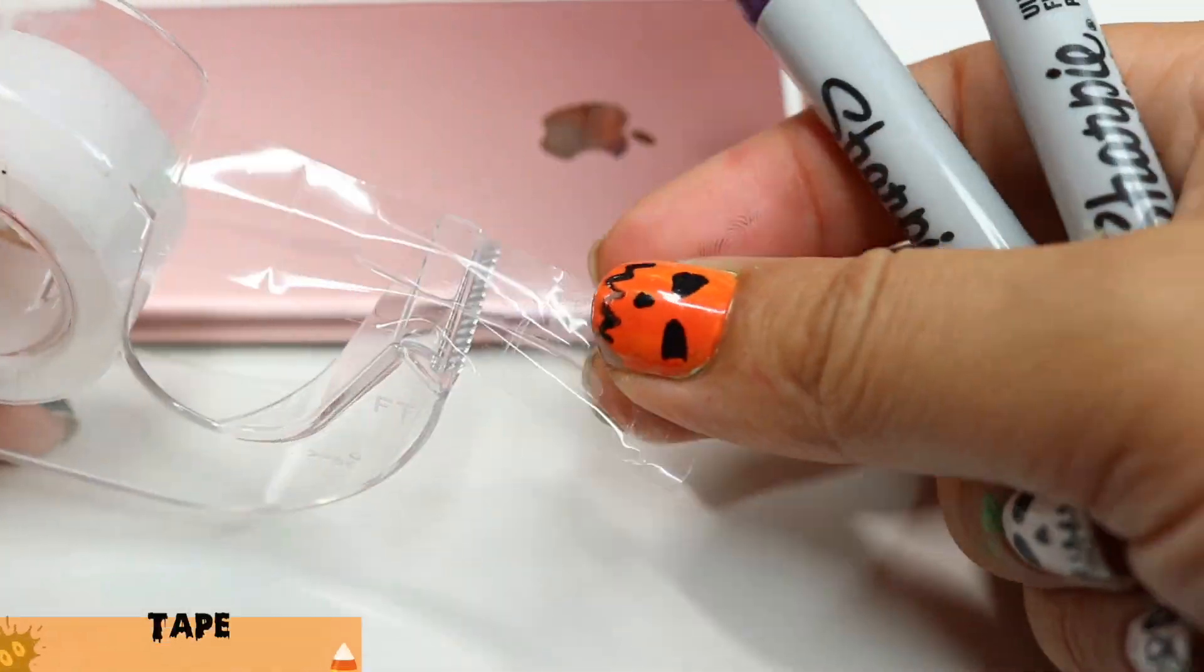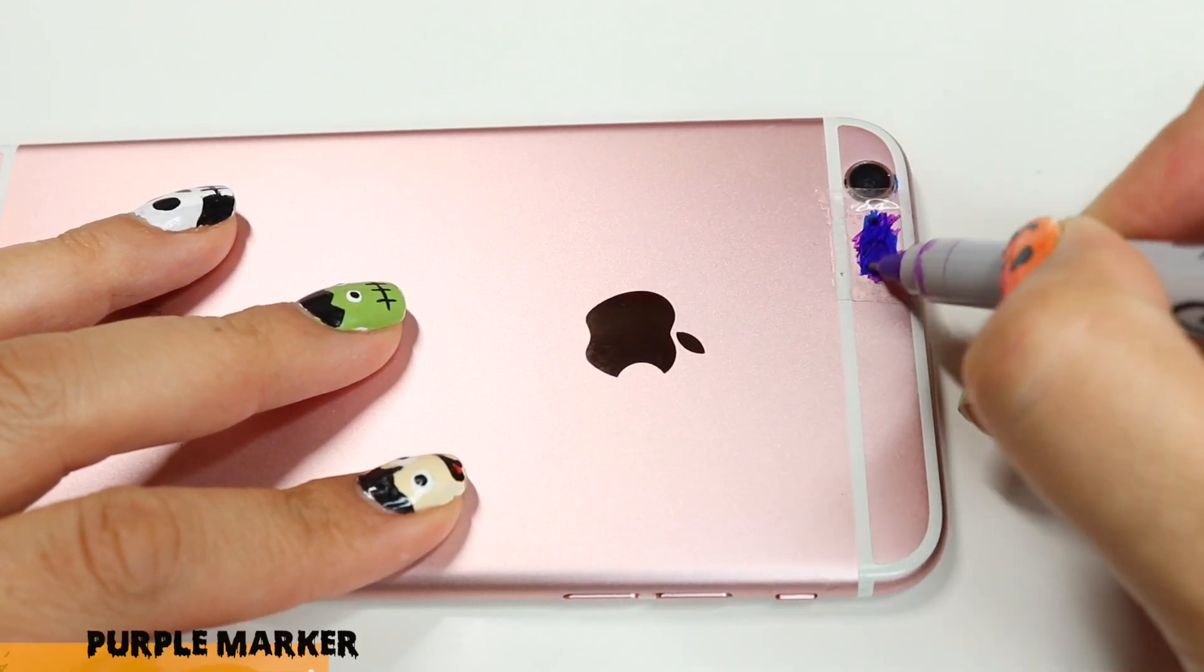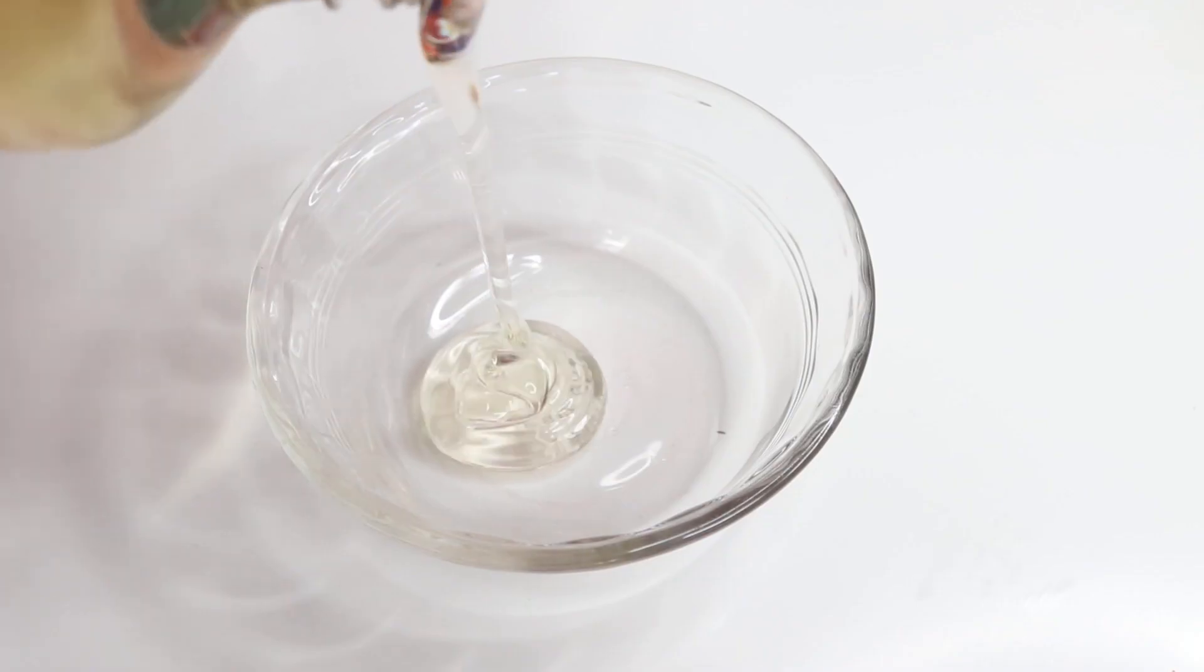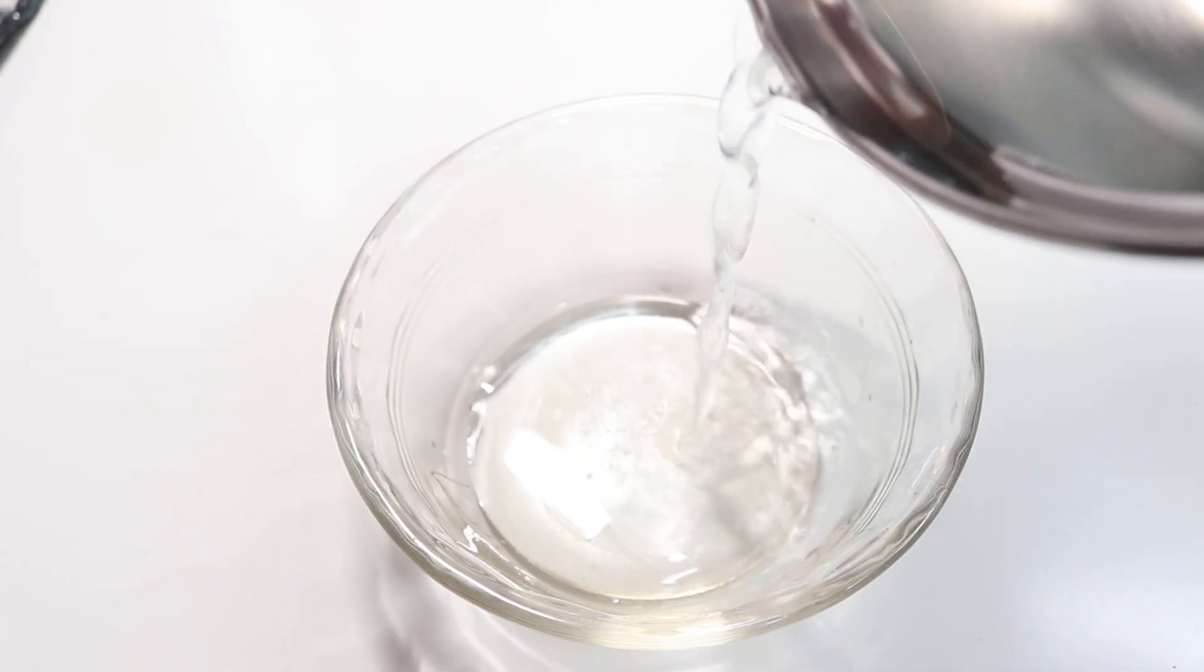For the sixth hack, something very interesting - I thought it wasn't going to work but it actually did. Put some tape where your light is on your phone, add some blue with the marker and then add some purple, and you would get this awesome black light.